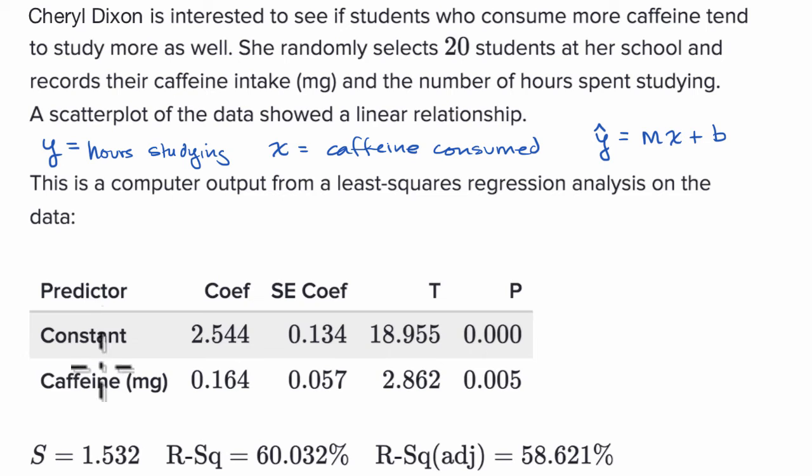So when you look at this table here, this first column says predictor. And it says constant and it has caffeine. And so all this is saying is when you're trying to predict the number of hours studying, when you're trying to predict y, there's essentially two inputs there. There is the constant value and there is your variable, in this case caffeine, that you're using to predict the amount that you study.